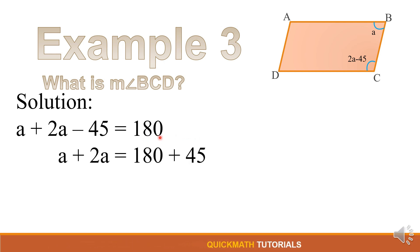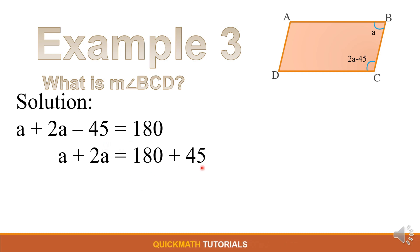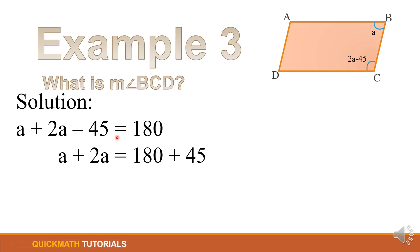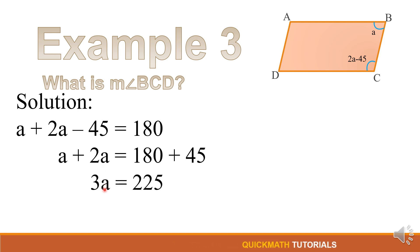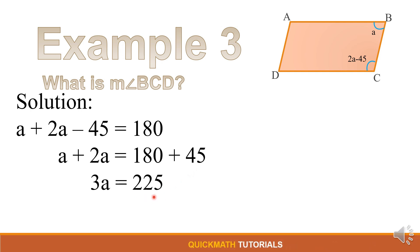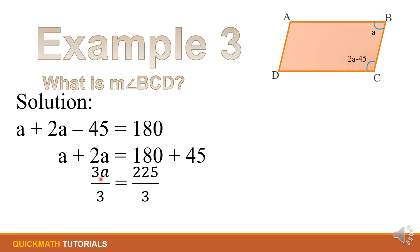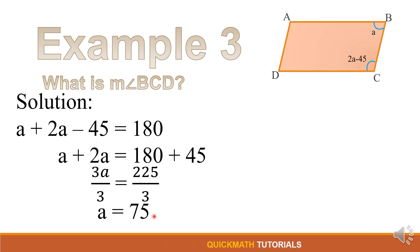Putting variable terms on the left and constants on the right: a + 2a = 180 + 45, so 3a = 225. Dividing both sides by 3: a = 75.